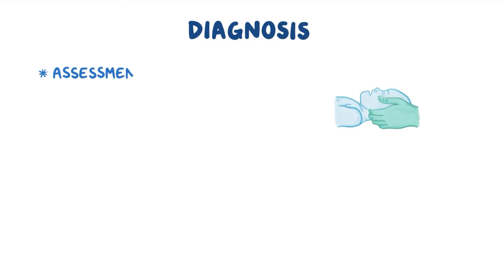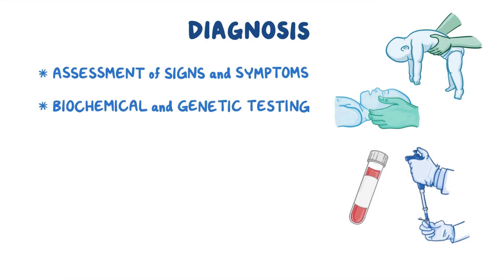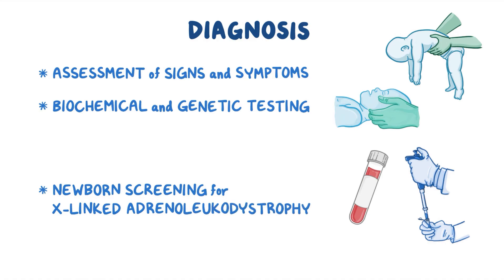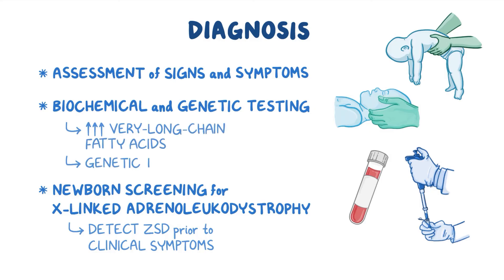Traditionally, diagnosis begins with an assessment of the individual's clinical signs and symptoms followed by biochemical and genetic testing. However, recently adopted newborn screening for X-linked adrenoleukodystrophy, a related peroxisomal disorder, may be able to detect ZSD prior to clinical observation of symptoms. Biochemical testing typically shows high levels of very long chain fatty acids, and genetic testing is often used to confirm ZSD.